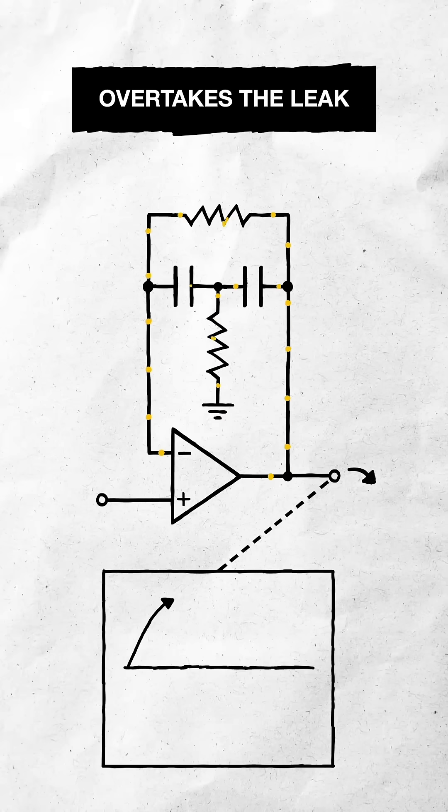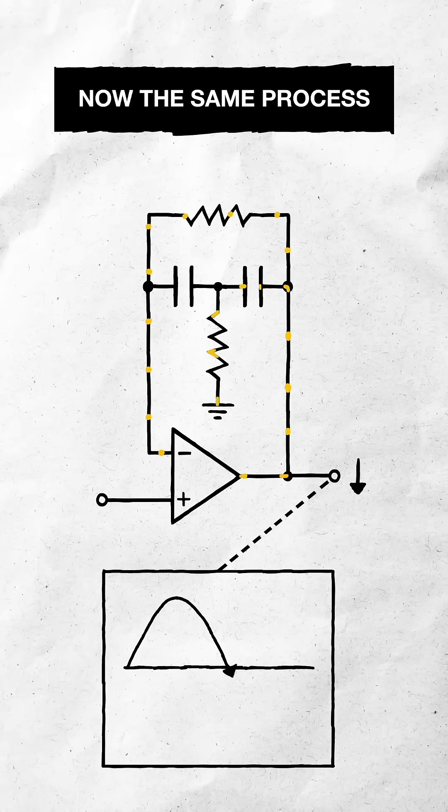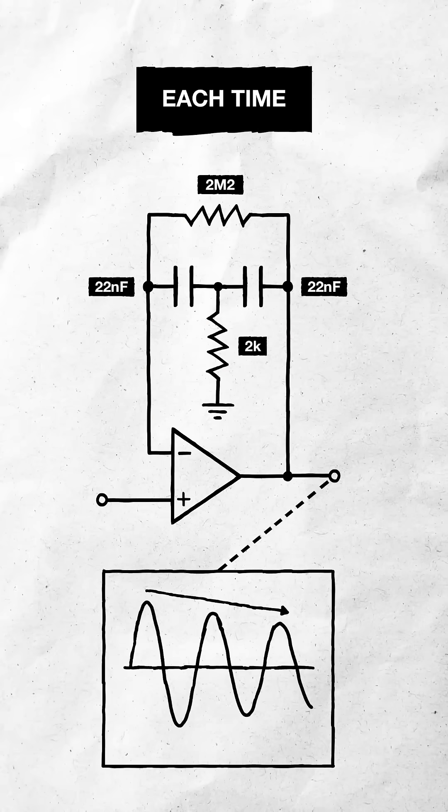Eventually, the slow rise overtakes the leak, forcing the opamp to reduce its output. Now the same process plays out in reverse, until it flips again, but from a slightly lower point each time.